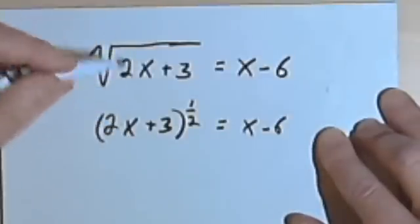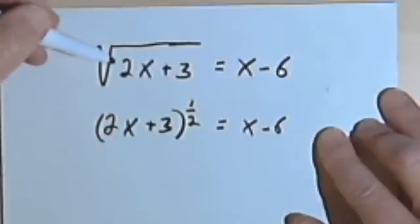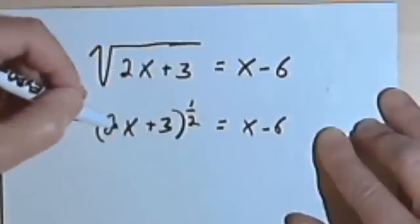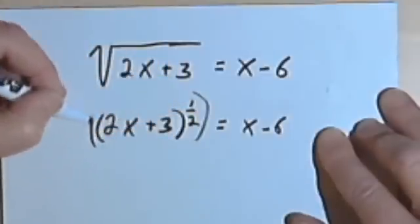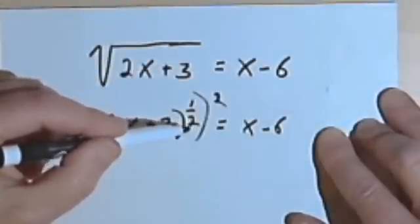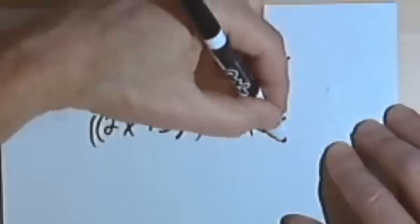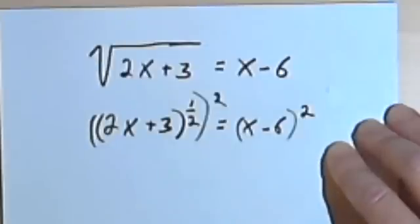Either way, I'm going to take the left side of the equation and square it. I'll either square the radical, which will get rid of the square root, or I'll take this 2x plus 3 to the one-half power and raise that to the second power, which will get rid of my one-half. So let's do that, which means I want to square the right side as well.